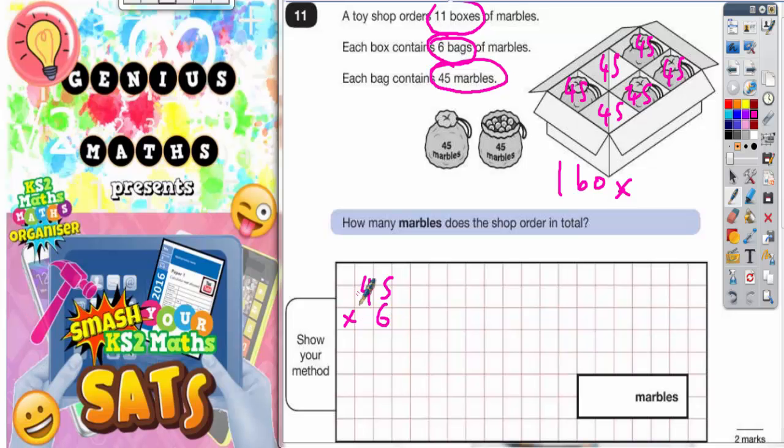Six lots of 45, which we can work out. So six lots of 45: six times five is 30, put the zero in, carry the three. Six times four is 24, plus the three is 27. So in one box we've actually got 270 marbles.